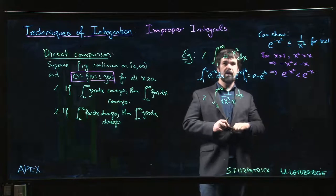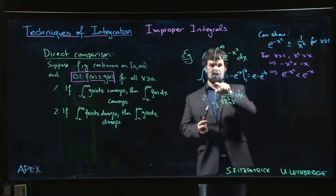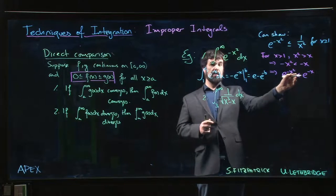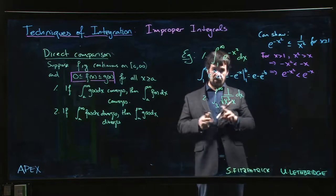And if we take the limit as b goes to infinity, e to the minus b is going to go to 0. So this integral converges, e to the minus x squared is smaller than e to the minus x. So that integral should converge as well. So that's another approach that you could take.